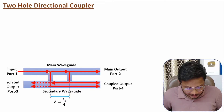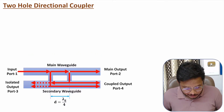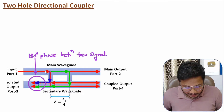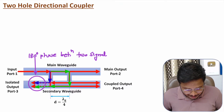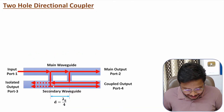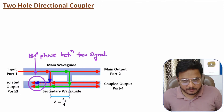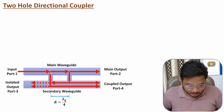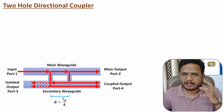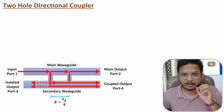However, when the signal goes in the reverse direction toward the isolated port, there is a 180-degree phase shift between the two signals. The signal arrives at the first hole with zero phase, and the second portion arrives with an additional lambda-g/4 plus lambda-g/4, totaling 180 degrees of phase shift. Because of this, the two signals cancel each other, and ideally the isolated output port has zero output. The spacing is lambda-g by 4 in general expressed as (2n+1) × lambda-g/4, where n equals zero.